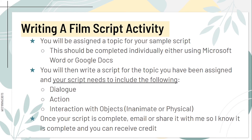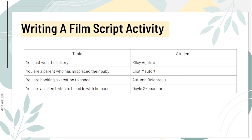Now we're going to be moving on to the activity. You will be assigned a topic for your sample script, to be completed individually using Microsoft Word or Google Docs. You will write a script for the topic you've been assigned, and your script needs to include dialogue, action, and interaction with objects — inanimate or physical. Once your script is complete, email or share it with me so I know it is complete and you can receive credit. Here are the topics and the students assigned to them. That is all I have for you today — if you have any questions, please don't hesitate to reach out to me.